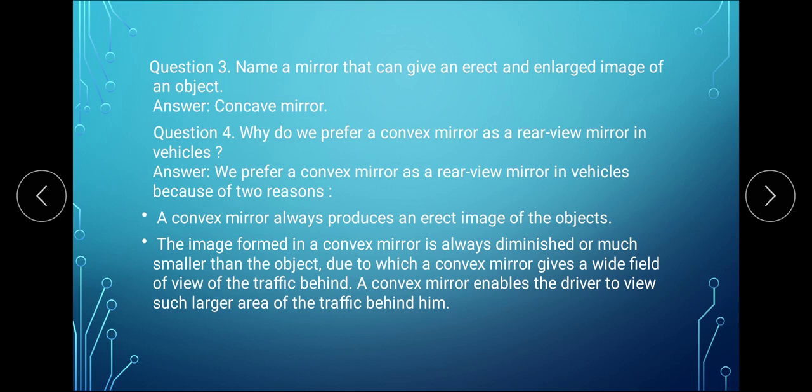Now read question number 3. Name a mirror that can give an erect and enlarged image of an object. We have learnt that the concave mirror, in the sixth case when the object is between P and F, gives us an erect and enlarged image. Therefore, the mirror which gives erect and enlarged image is concave mirror.